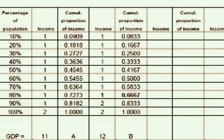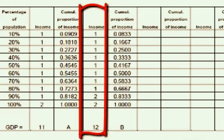We're going to start with a 10-person economy, where each person represents 10% of the economy. Eight individuals earn $1 each, and two earn $2 each. So the total income is 8 plus 2 plus 2, and the GDP is 12.